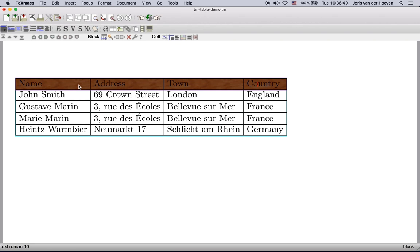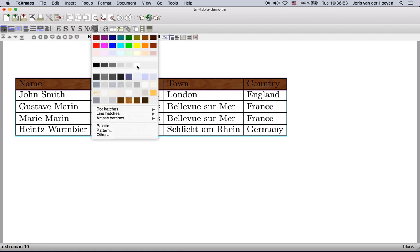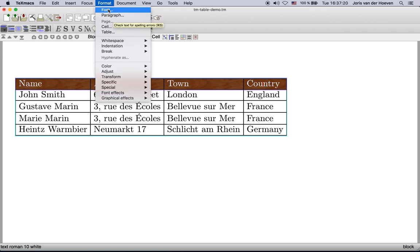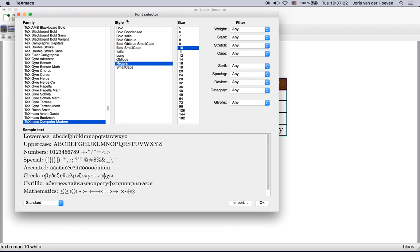A few other text properties can be changed as well for selected groups of cells such as the text color. For changing the font itself you should not use the content tags from the insert menu or any of the icons here. Instead you should use format font for changing the font.